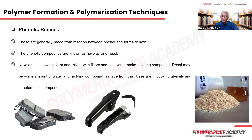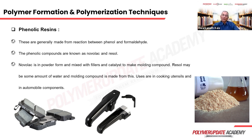Phenolic resins are very old materials. Moulding compounds are made from phenolic resins, which are a reaction product of phenol and formaldehyde. There are two types: novolac and resol. Resol is made into a moulding powder mixed with fillers and catalysts, then heated in a mold to form the final product. Examples include the handles of pressure cookers and cooking pans — they are heat resistant, very strong, and good electrical insulators. Foam boards made from phenolic resins are also used on stages and in walls.